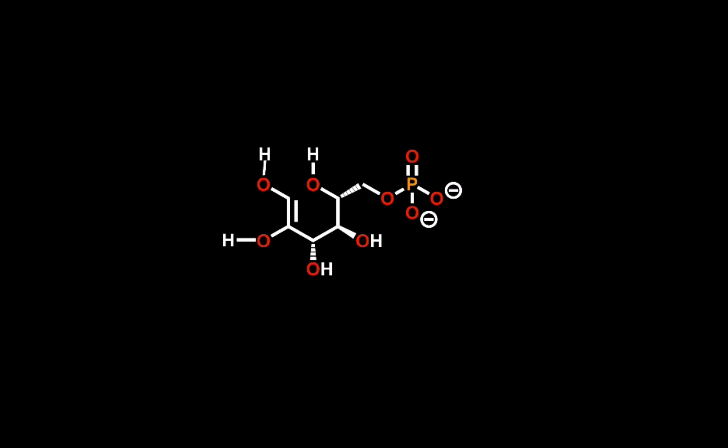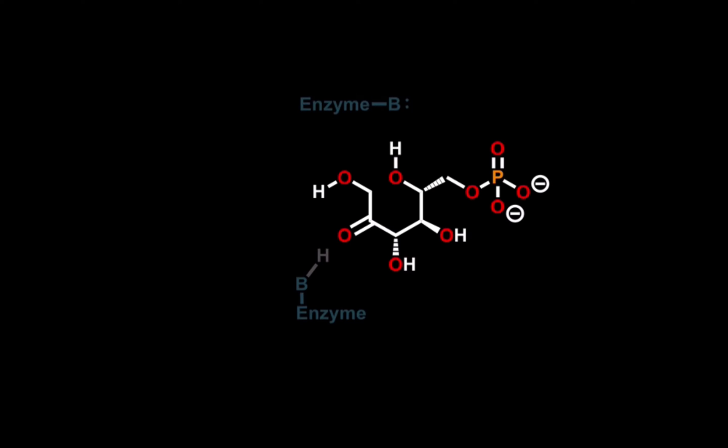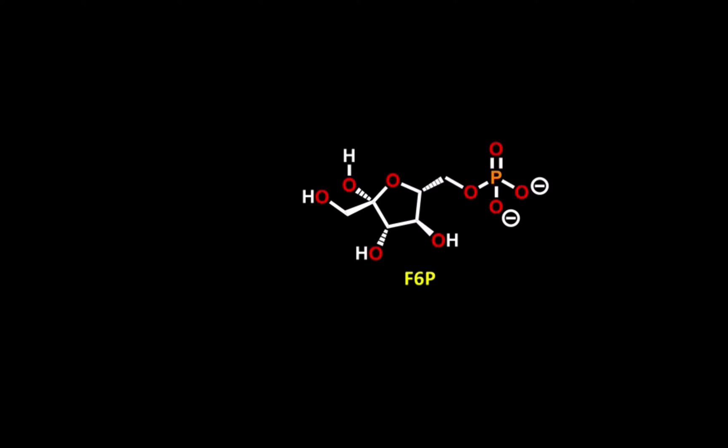To complete the reaction, a basic enzyme residue deprotonates this alcohol and the electrons left behind form a carbonyl, this time a ketone, and the alkene gets protonated by the enzyme on the other side. The sugar ring can again close before the product is released from the active site.